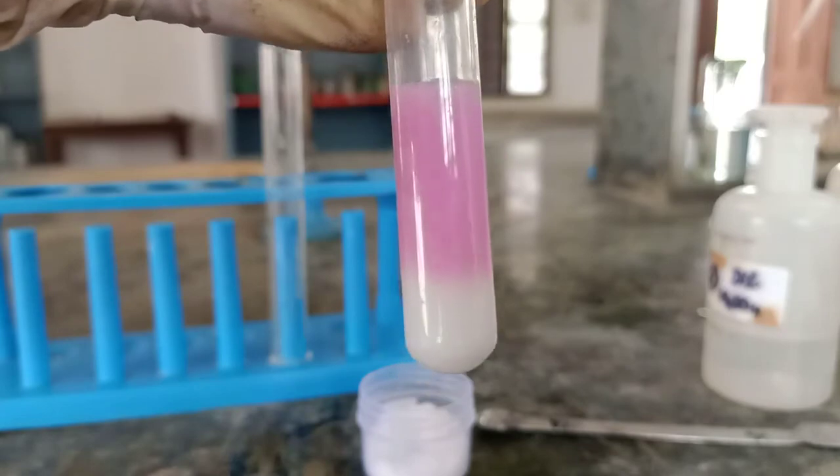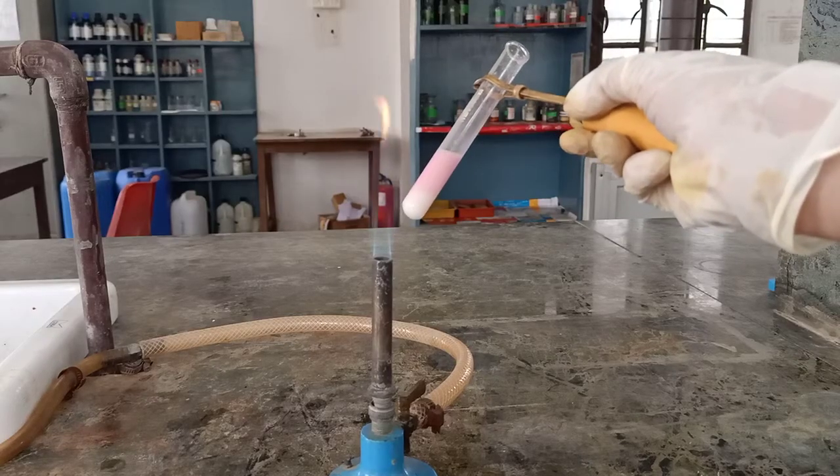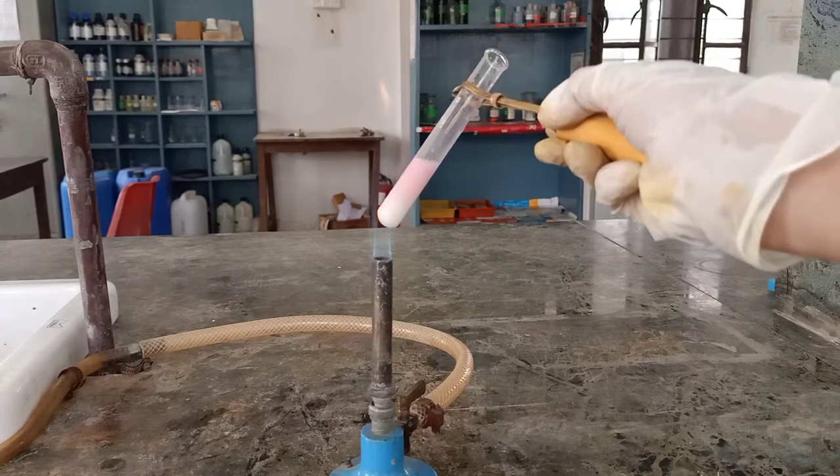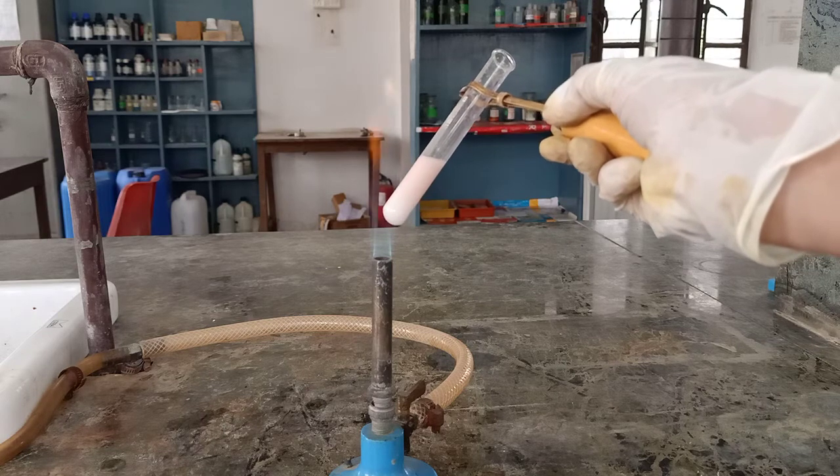Now I am going to heat this solution. If this pink color disappears, it will confirm the presence of oxalate anion. So we will heat the test tube. And you can see slowly the pink color has disappeared.